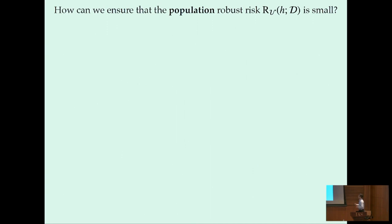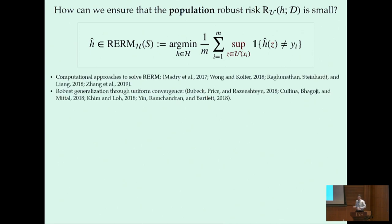So how can we ensure that the population robust risk is small? Well a standard approach that one would think of is once we receive a sample S from the distribution, let's just minimize the robust loss on the data, on our training data. So let's just pick a predictor H in the class that minimizes the robust loss. And there is recent work that studies computational approaches to solve this problem as well as work that establishes generalization guarantees through uniform convergence of the robust risk.